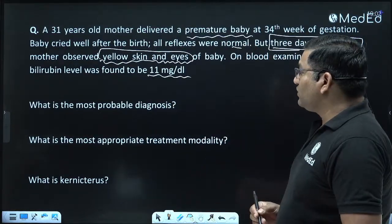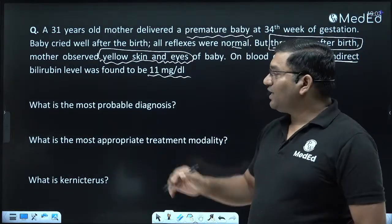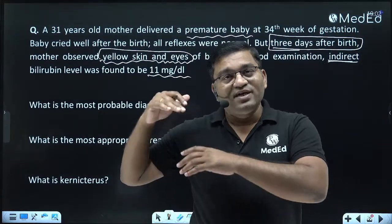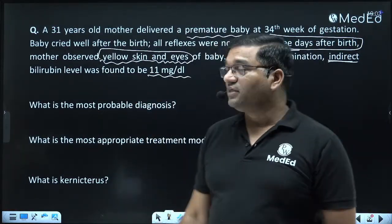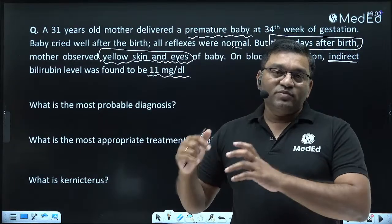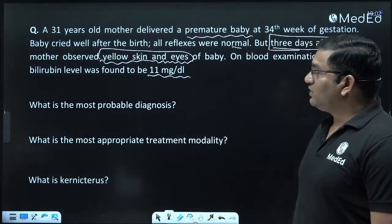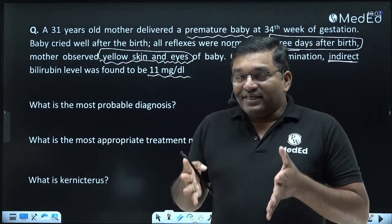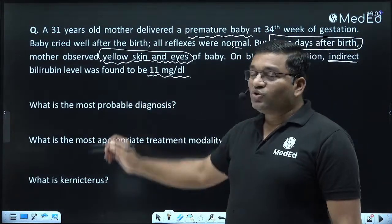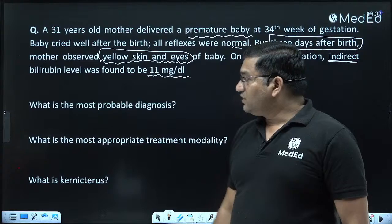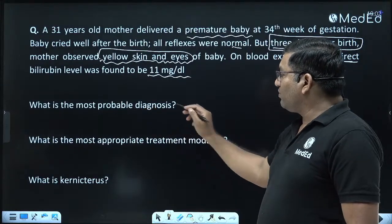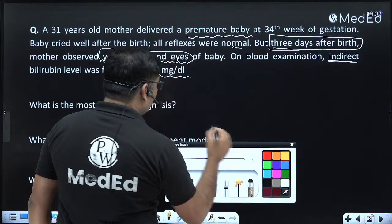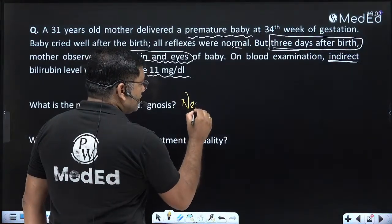This is frequently asked as a clinical case from hemoglobin chemistry and metabolism. In neonatal physiological jaundice, bilirubin can go up to 14-15 mg per deciliter, or even up to 20 mg per deciliter, but rarely goes beyond 20. Here, indirect bilirubin — that is, unconjugated bilirubin — is raised. So the most probable diagnosis is neonatal physiological jaundice.